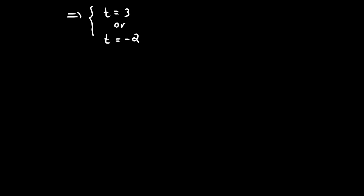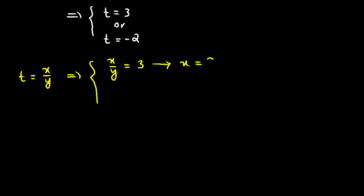Remember that t is x over y. Therefore, x over y equals 3, which means x equals 3y, or x over y equals negative 2, which means x equals negative 2y. So we have two scenarios, two different relations between x and y.